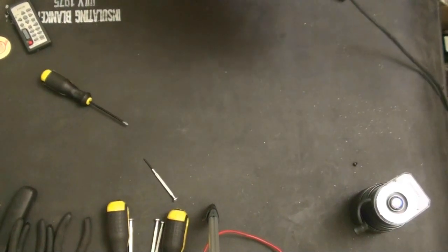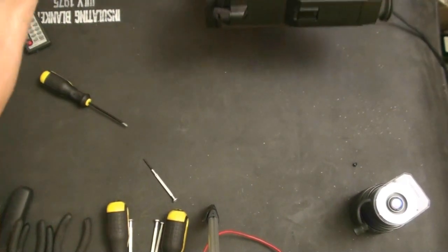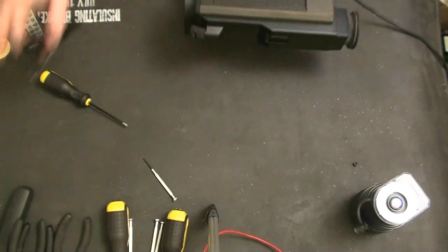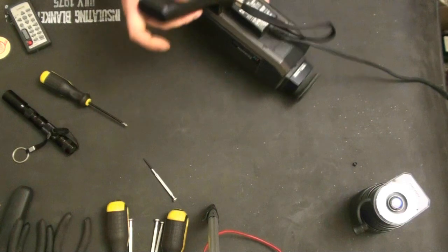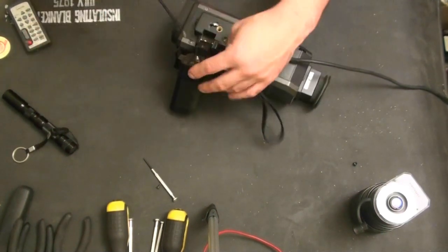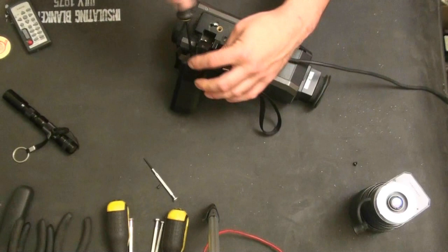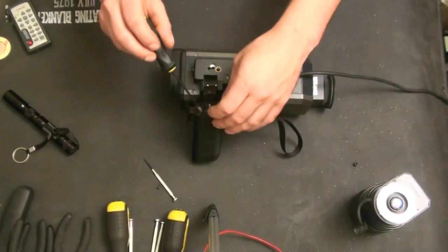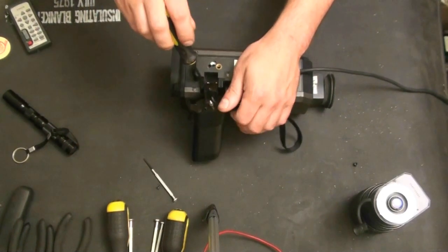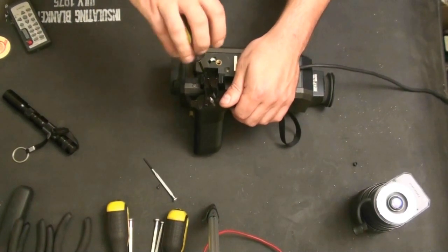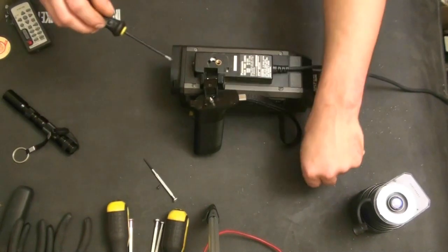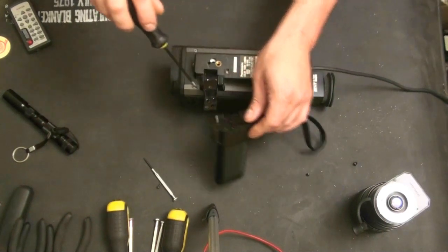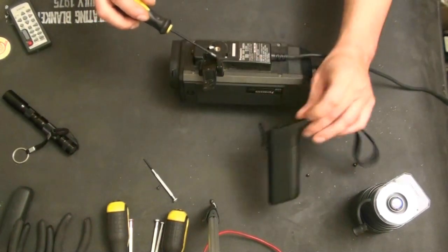Alright, so the handle is actually held on here with a few screws. So the handle is on the hinge, and that should take it right off. I think. Yes. Okay, there we go. Handle is off.